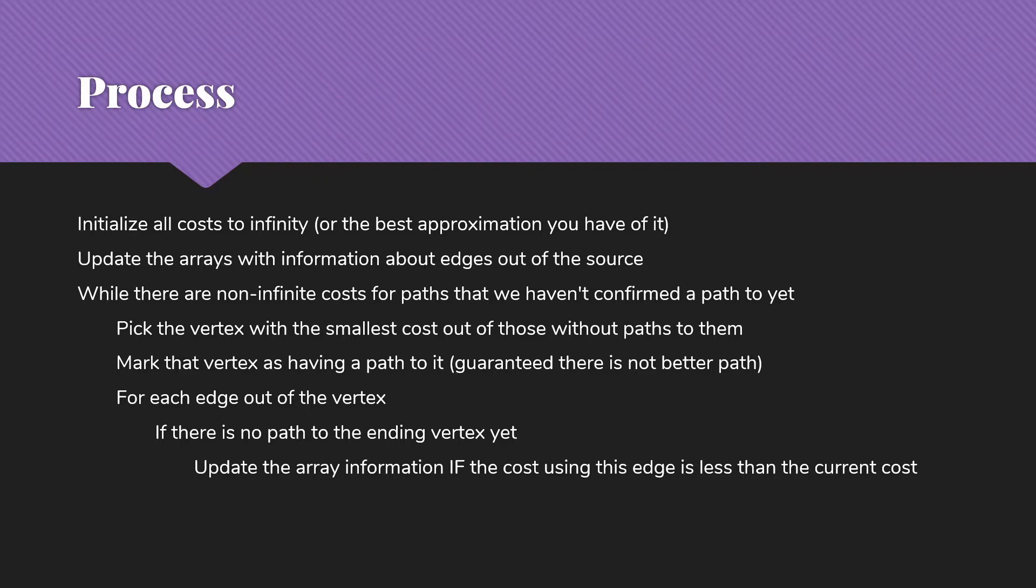Then we're going to go into our loop. While we have non-infinite costs for paths where we haven't confirmed a path, then we're going to pick the vertex with the smallest cost out of all of those that don't have paths confirmed.